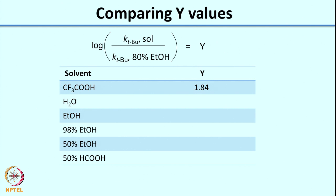Now let us do the same exercise as before. We are looking at ionization of t-butyl chloride with 80% ethanol in the denominator. Can you comment on the relative trends for the values of Y? Try to fill out these values in your notebook — not necessarily exact, but get the relative trends: in which cases Y is greater than 1.84, where Y is positive, and where Y is negative. Press pause and work it out.